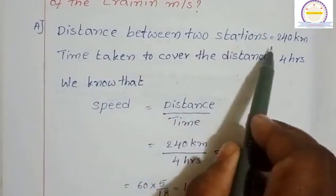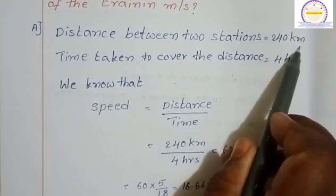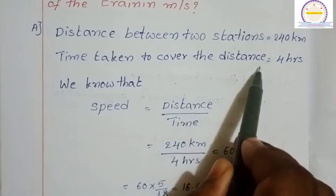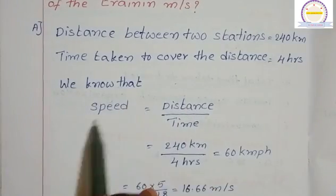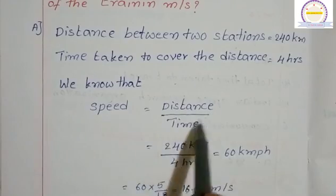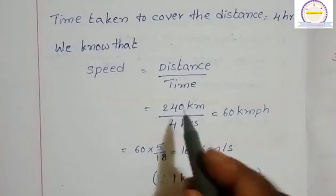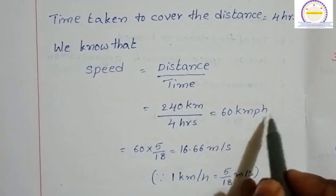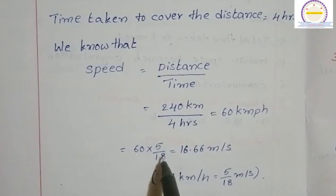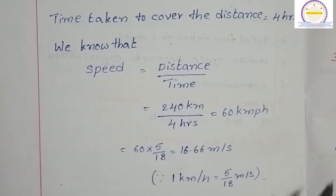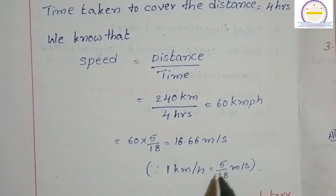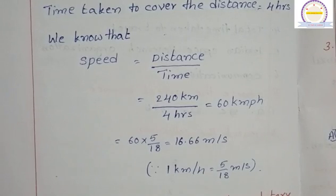Distance between two stations equals 240 kilometers. Time taken to cover the distance: 4 hours. We know that speed equals distance by time, so 240 kilometers divided by 4 hours equals 60 kilometers per hour. 60 times 5 by 18 equals 16.66 meters per second. That's why 1 kilometer per hour equals 5 by 18 meters per second.